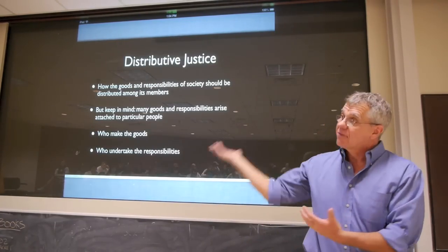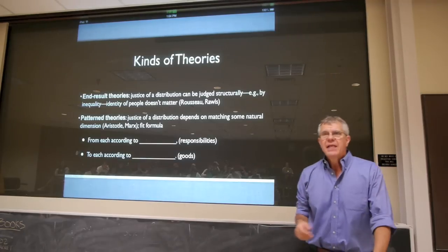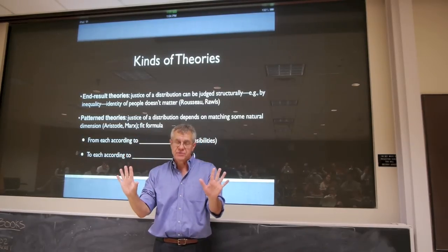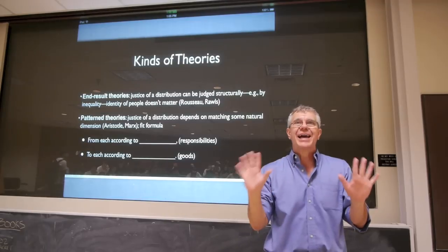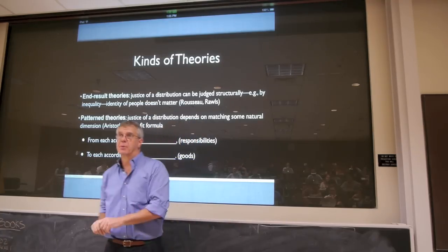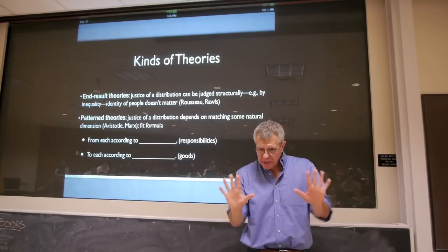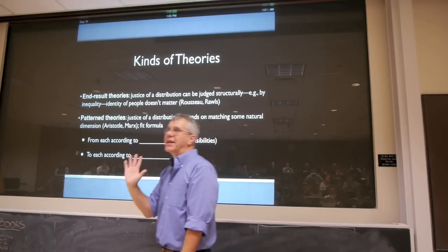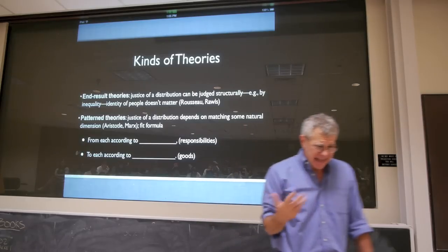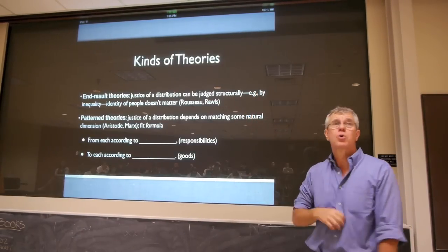It becomes a question of looking at this in the context of who actually makes these goods and who undertakes these responsibilities. There are a number of kinds of theories of distributive justice. Nozick presents a very helpful characterization and classification. First, some theories are end result theories. They look at justice purely in terms of the resulting balance — the resulting balance of responsibilities and goods in a society. They don't really care who does what or who has what goods. It's just a structural judgment — you could look at a graph and determine the degree of justice from this point of view.